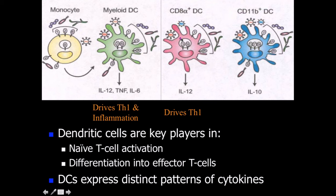This is a picture provided by previous students in this course — actually med students. It's a really interesting picture showing the actual monocyte, the myeloid dendritic cell, and then the CD8 and CD subtypes, which we'll talk about later on. This just shows an illustration of deriving the Th1 and inflammation, which we'll talk about what that means later.